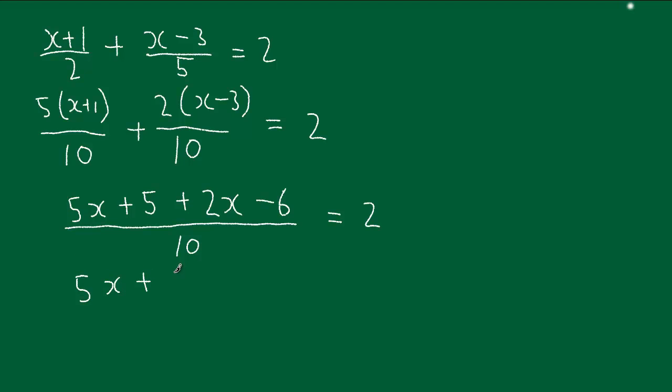5x plus 5, plus 2x, minus 6. Take the 10 up to the other side, so that's 2 times 10, which is 20.